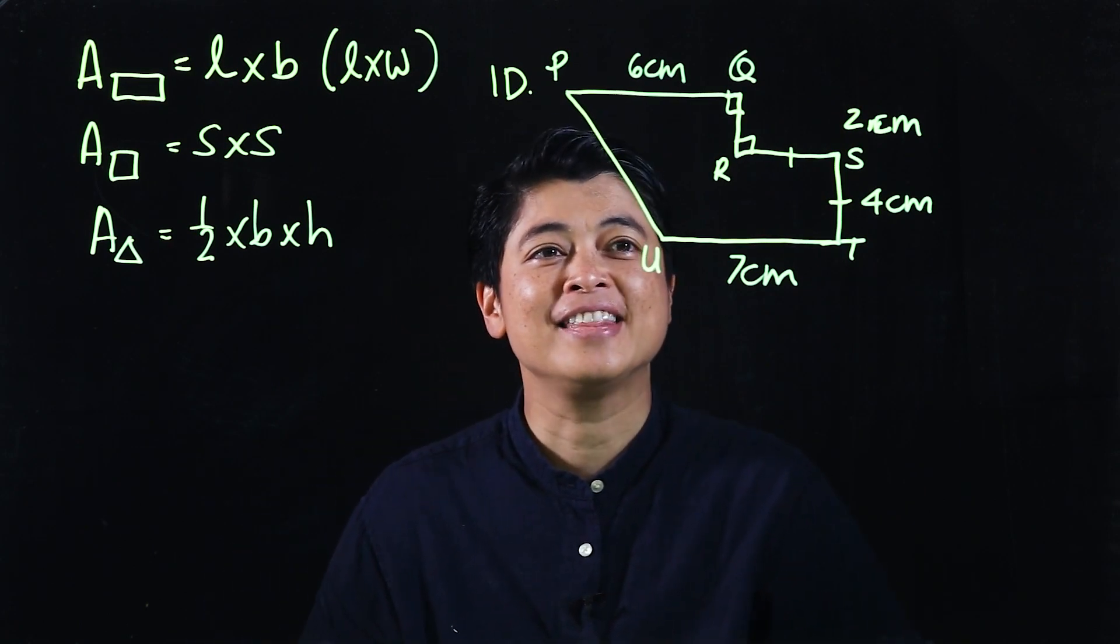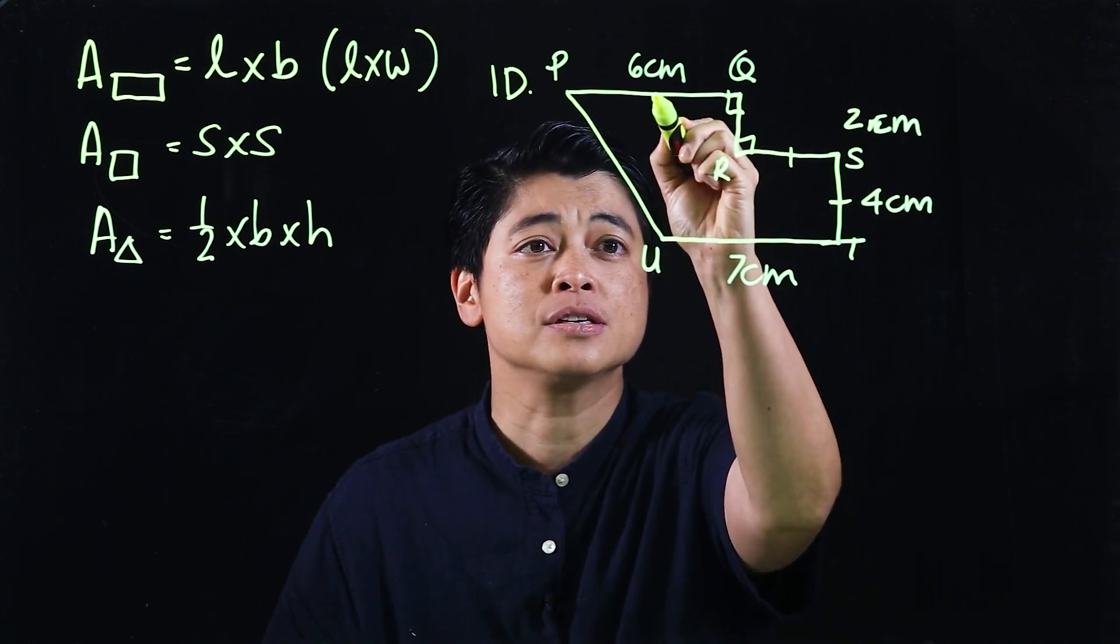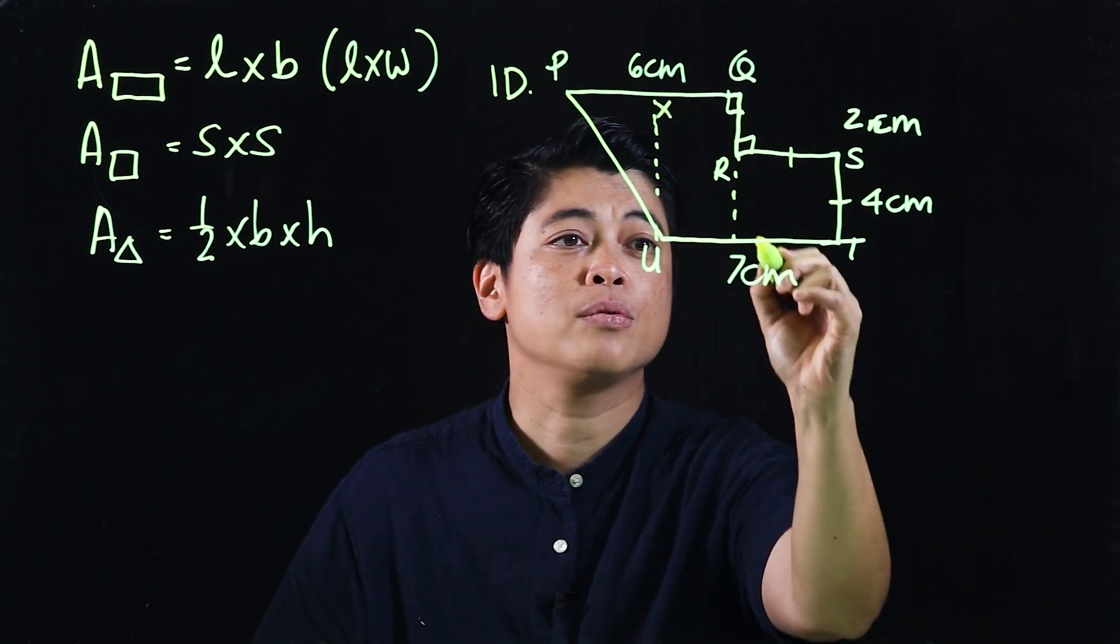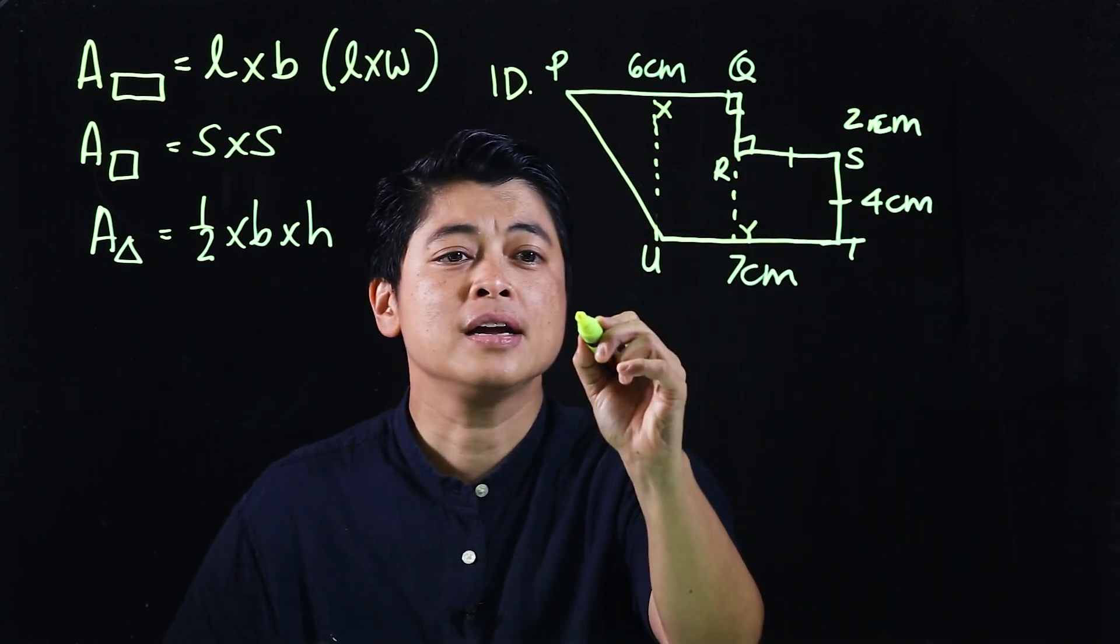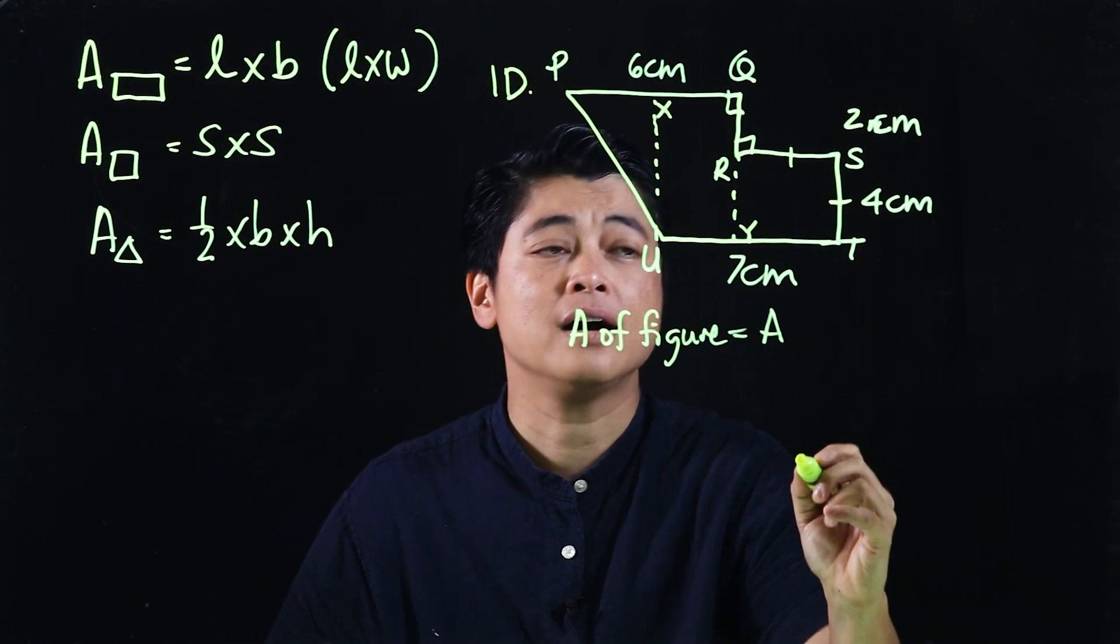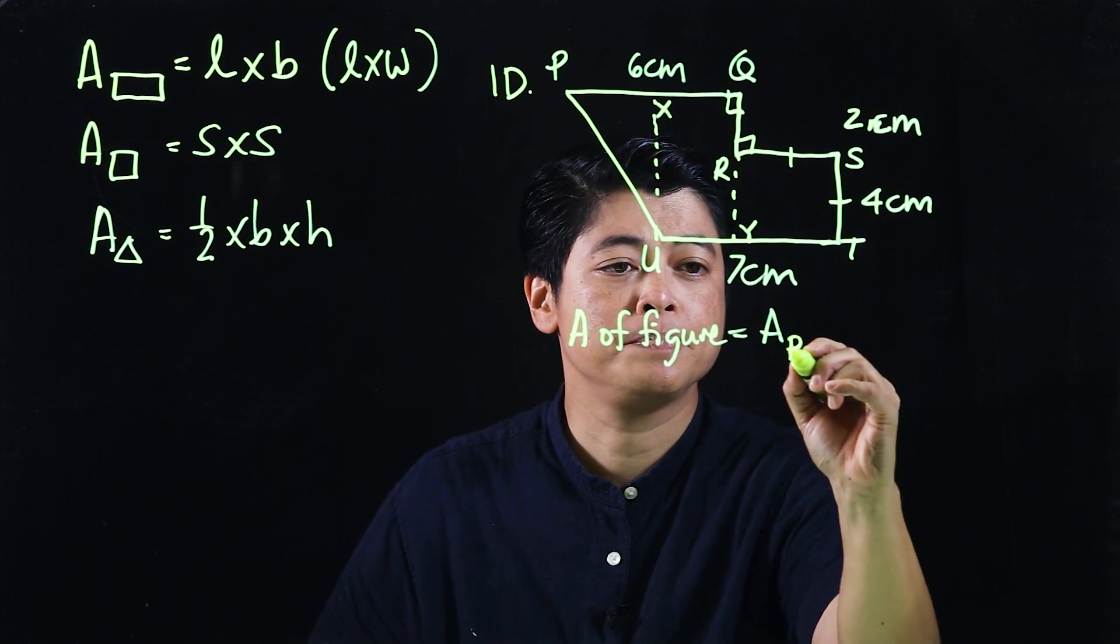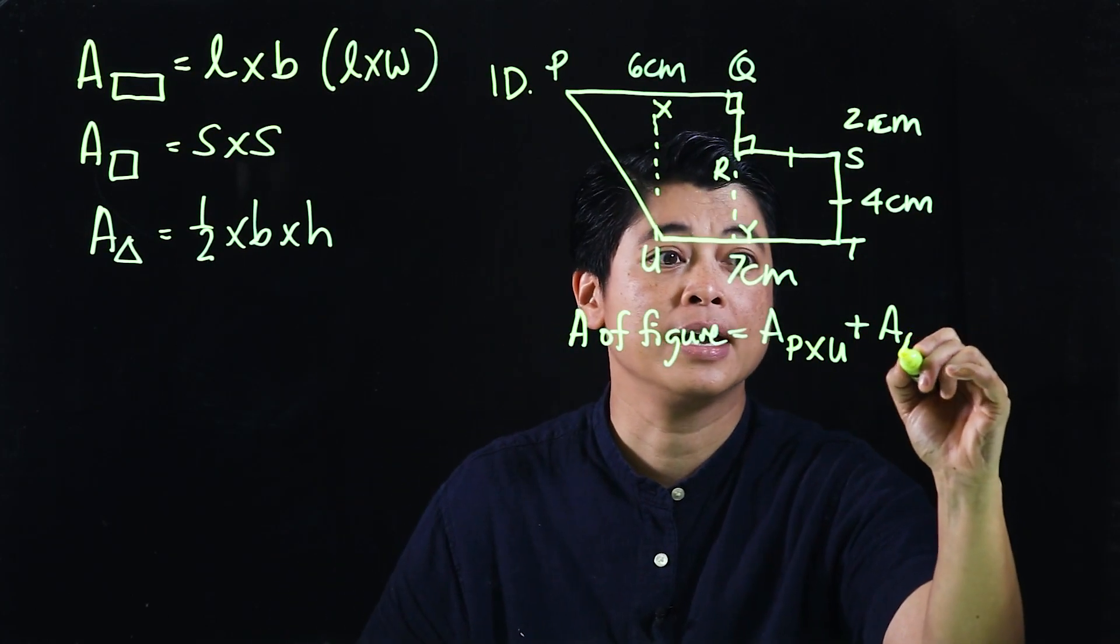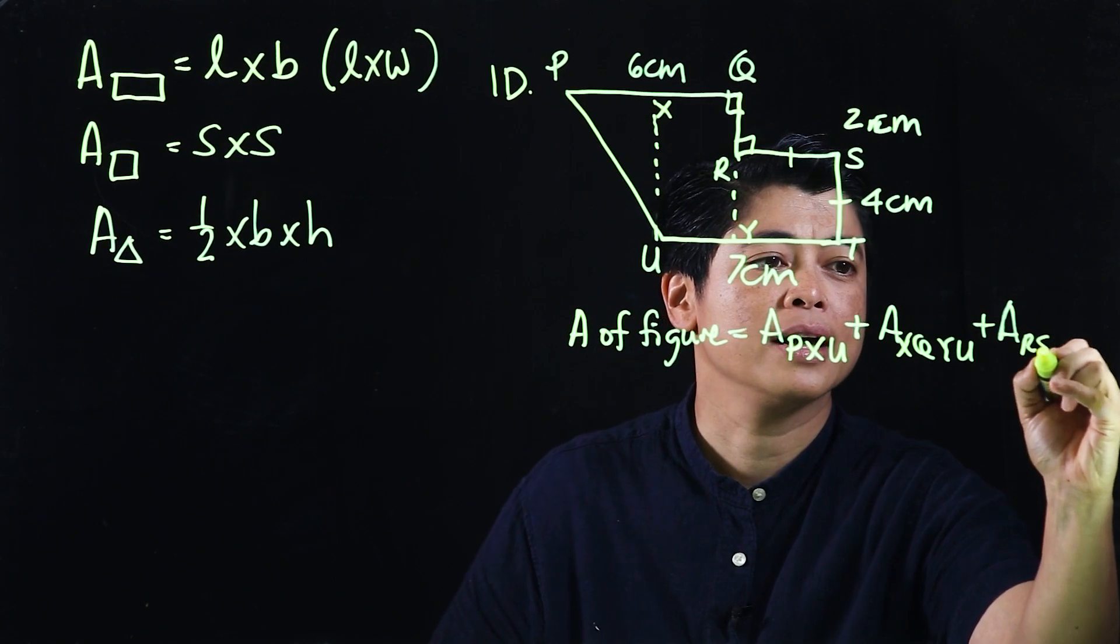Clearly this is a mixture of a triangle and a few rectangles. My suggestion is first draw lines here and here. I will call this X and I will call this Y, so that when I write down the area formula I can refer to them. The area of the whole will be area of PXU plus area of XQYU plus area of RSTY.